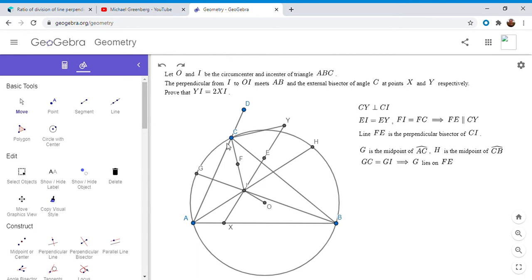So I'm going to write that out here. But if GC is equal to GI, then that means G has to lie on the perpendicular bisector of CI. But we said that FE was the perpendicular bisector of CI. So if GC equals GI, then G has to lie on the line FE. And we can use the same logic with H. So HC is equal to HI. And so H also has to lie on FE. And if both G and H lie on the line FE, then that means all four points G, F, E, and H are collinear.